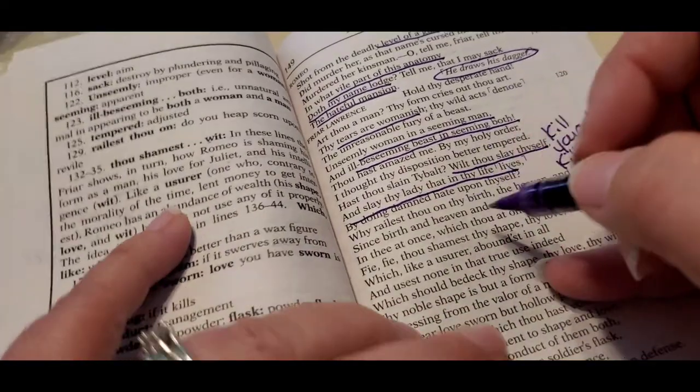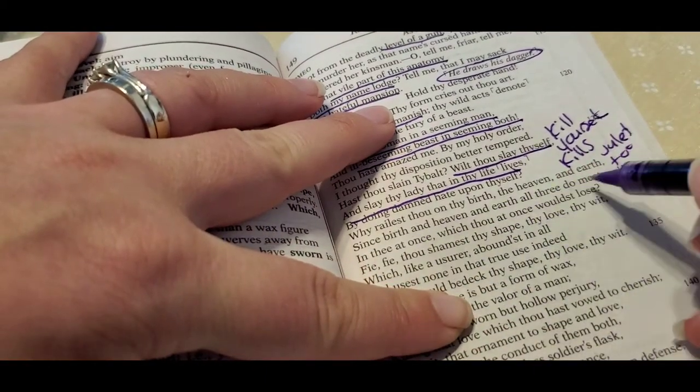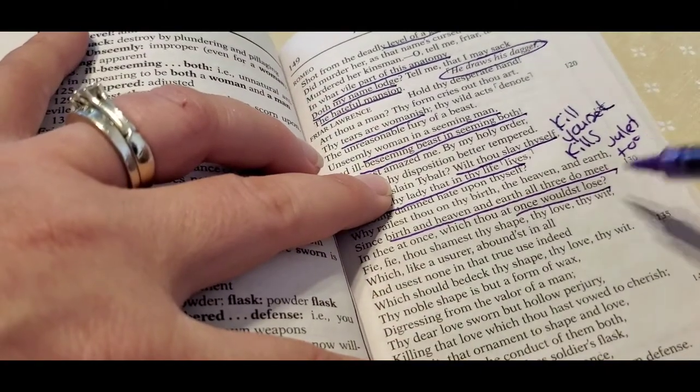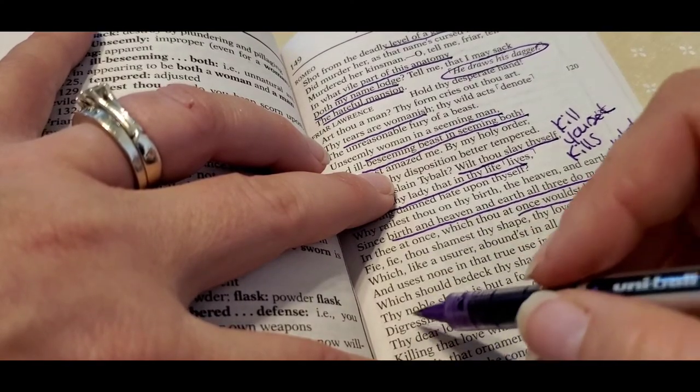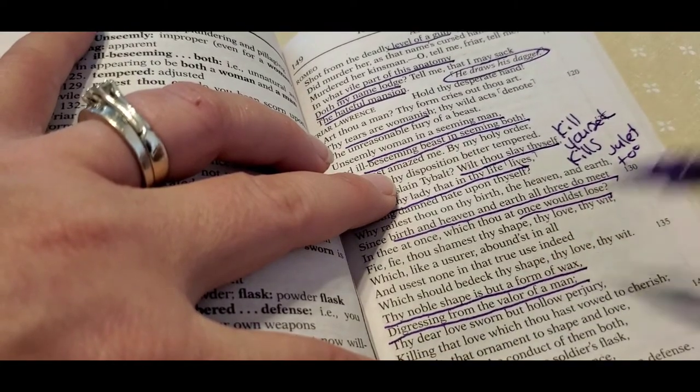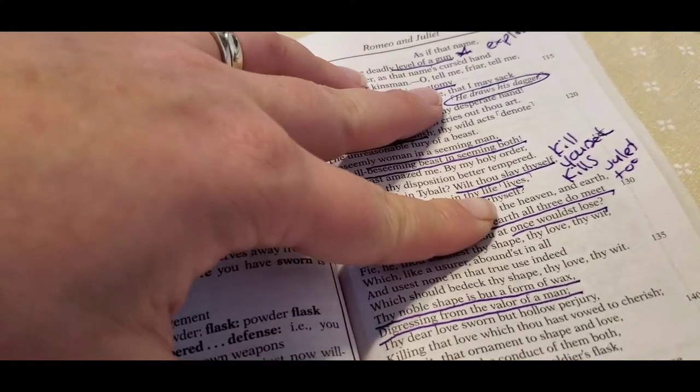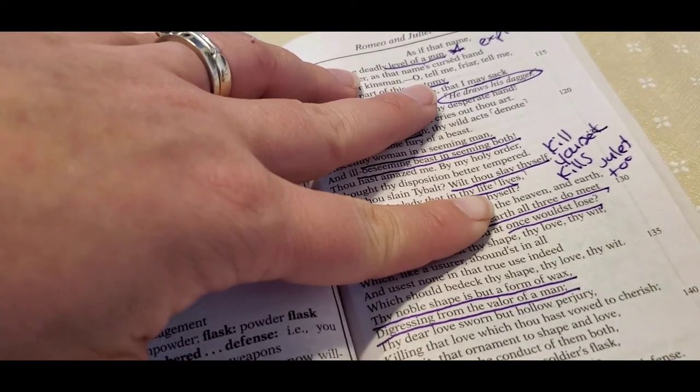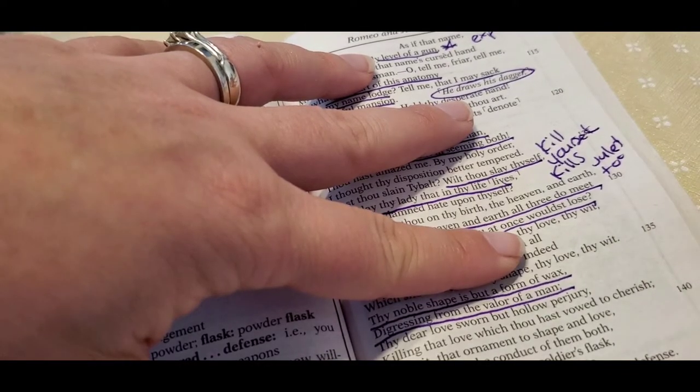And this is all again about the whole concept of that. This is a religious man. And so he's telling him, if you kill yourself, if you commit suicide, you will never be with her. And you kill your relationship in the afterlife with her. And so then what happens is he says, since birth in heaven and earth, all three meet. So this is their religious perspective. And you would lose all this. And he says, your noble shape is but a form of wax digressing from the valor of a man. Thy dear love sworn, but hollow perjury. They're all being chit chatty. I'm almost done. So we're almost done guys. Killing that love without his vow to cherish. So he's saying, you're not being a man. You'd look like a man, but you're not acting like one.